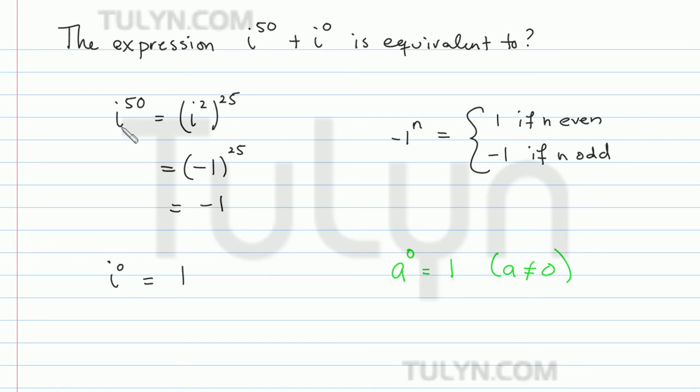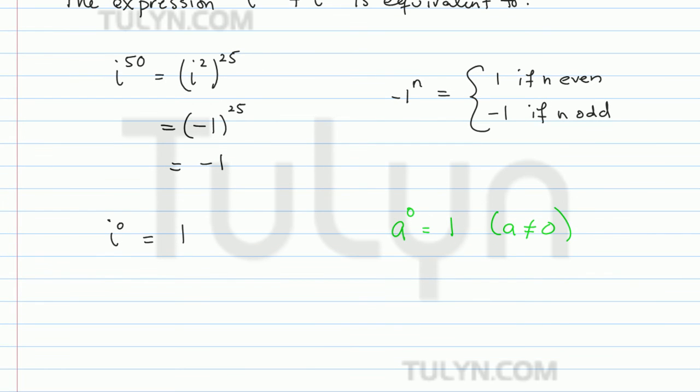So now we have, we simplified i to the 50th power, and we simplified i to the 0th power. So combining them together, this is the same thing as negative 1 plus 1, which is going to be equal to 0.